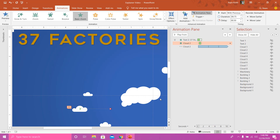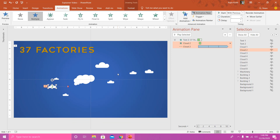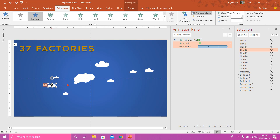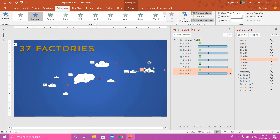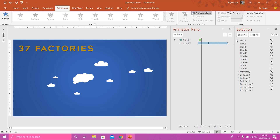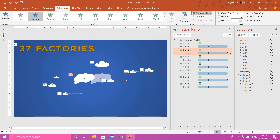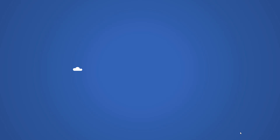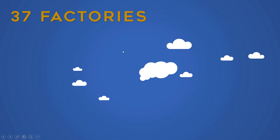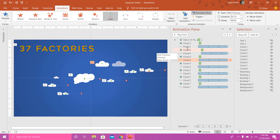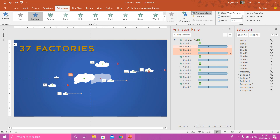So that way it will zoom in slightly and start moving in the direction set by the motion path. Now with one cloud ready, I select it, double-click Animation Painter to lock it, then click on the other clouds to duplicate both animation effects across all of them. Later, you can add individual delay timings — for example, 1.25 seconds for Cloud 8 and 0.50 seconds for Cloud 6. That way you can vary the delay and duration for all the clouds.